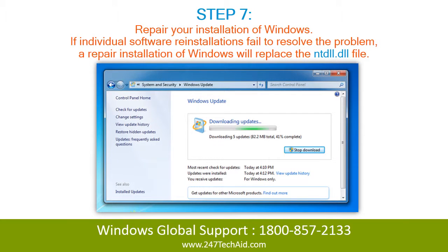Step 7: Repair your installation of Windows. If individual software reinstallations fail to resolve the problem, a repair installation of Windows will replace the file.